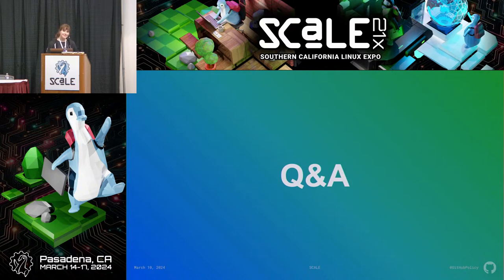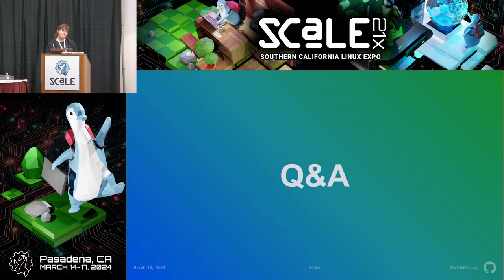Thanks for your talk. I work in climate change, so policy is also very important for us. But there's very often a misalignment in incentives — as scientists we say we should be doing this, and policymakers say it costs money. Is there something we can learn from you to be more effective in advocating for what we should be doing and trying to align incentives between what scientists say and what policymakers want to accomplish?